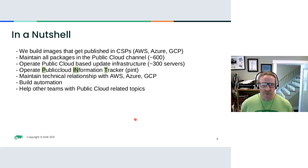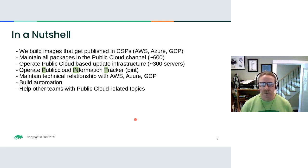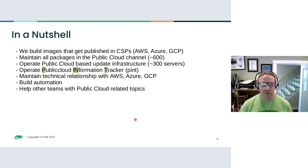What is it that the public cloud team does? In a nutshell, we build all the images for the SUSE Linux Enterprise family that get published in our primary partners' CSP networks — that's AWS, Azure, and Google. We maintain all the packages in the public cloud channel, which have now grown to about 600. We operate the public cloud update infrastructure — that's a little more than 300 servers running. Then there is the public cloud information tracker, Pint, that gets operated by the team and the code is developed. We maintain the technical relationship with AWS, Azure, and GCP. We built the automation, which is the topic of this talk, and we help other teams with public cloud related topics.